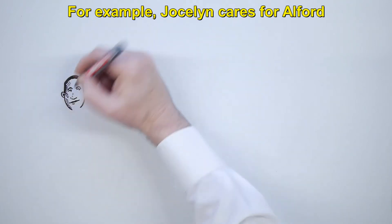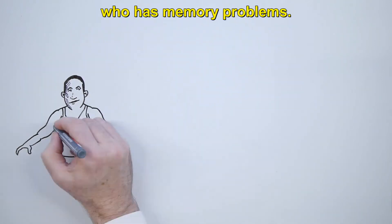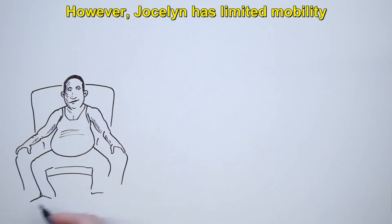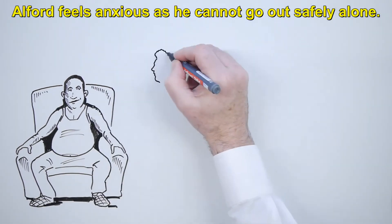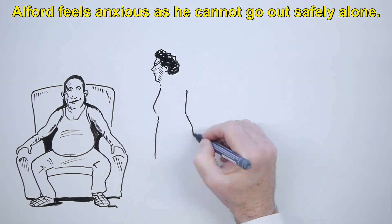For example, Jocelyn cares for Alfred who has memory problems. However, Jocelyn has limited mobility and rarely leaves home. Alfred feels anxious as he cannot go out safely alone.